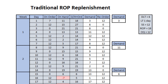Day 3: the on-hand, plus no order due, is above 18, so no replenishment order is required. We continue doing this for the full 35 days, using the demand each day generated by the random number generator.